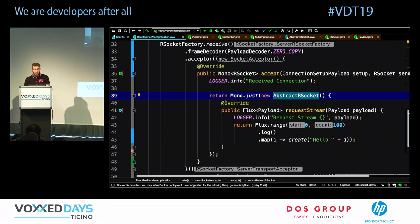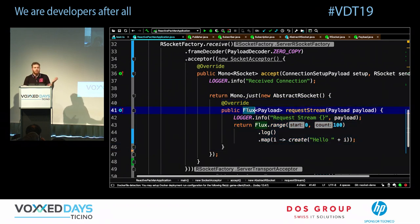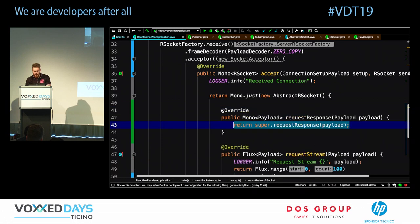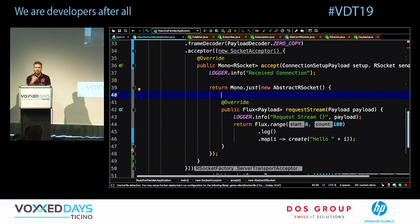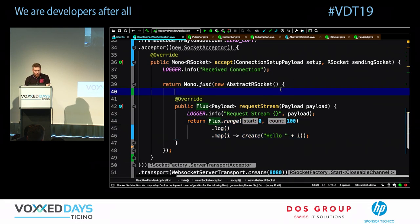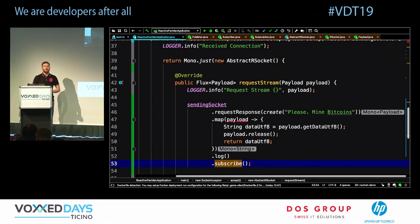There's AbstractRSocket — an implementation of the RSocket interface that returns an error by default, allowing you to start quickly. Override `requestStream` to return a Flux — a stream in Project Reactor, like Observable from RxJava or an infinite stream of messages. Override `requestResponse` to return a Mono — a single-element stream. You can return whatever you want, like a Flux of 100 messages.